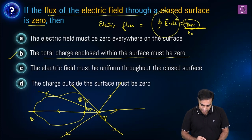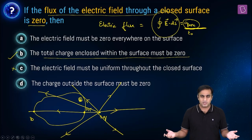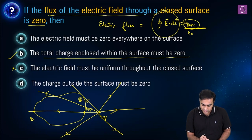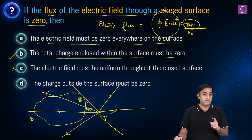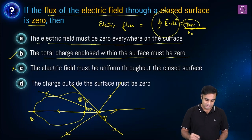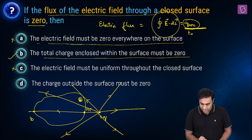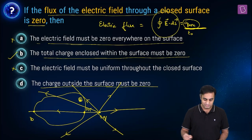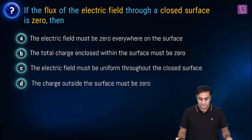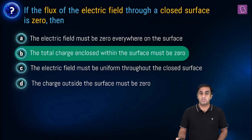So option C — that the field must be uniform throughout the closed surface — is wrong. Option A — that the electric field must be zero everywhere on the surface — is also wrong, as just proved. Option D — that the charge outside the surface must be zero — is also not true, as we just discussed. So the correct option happens to be B.